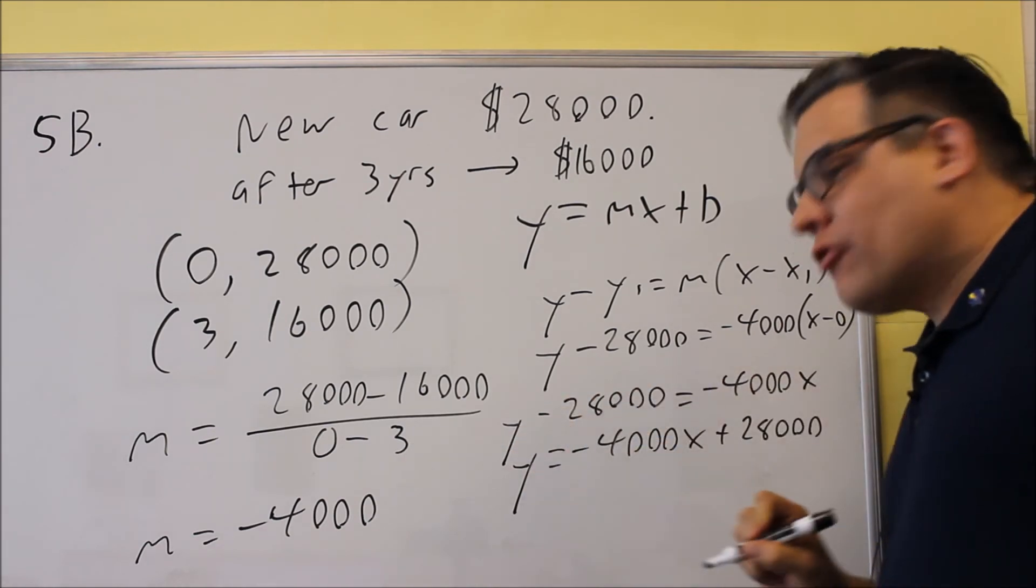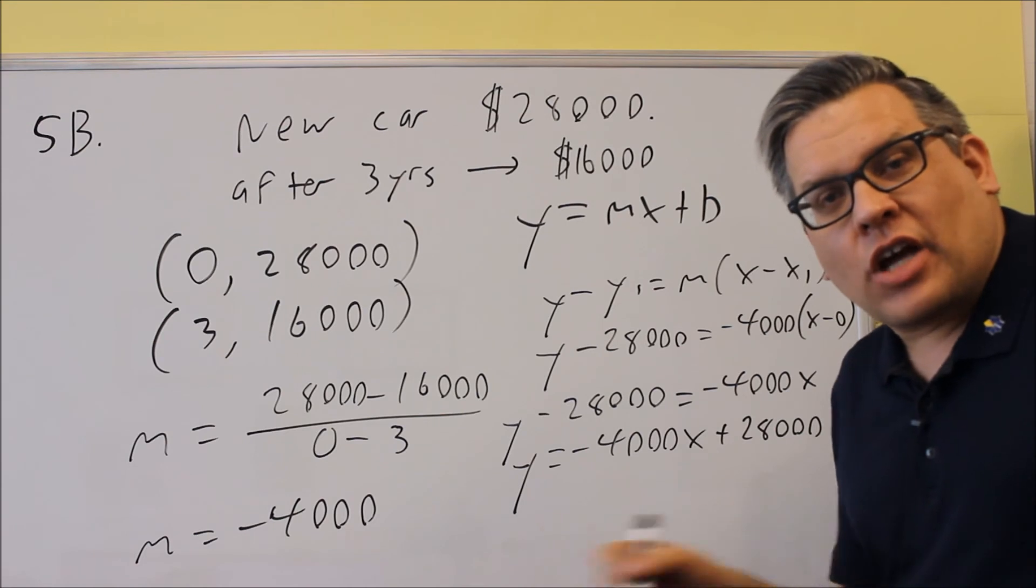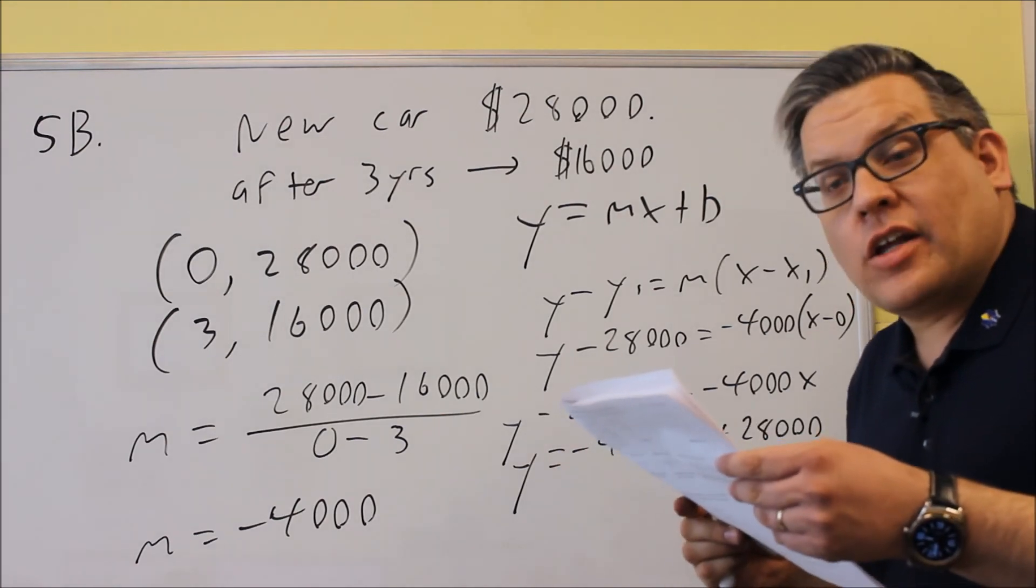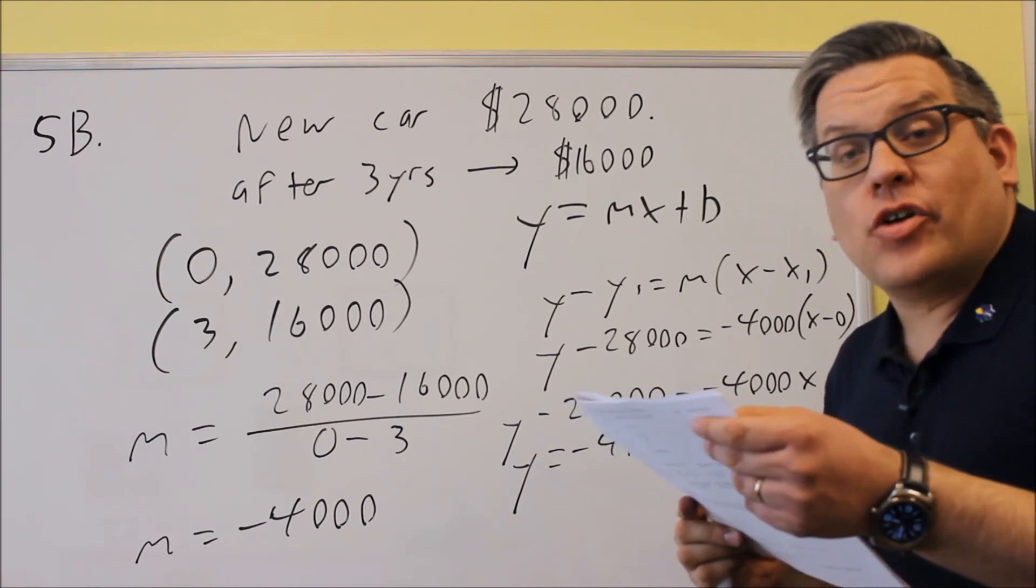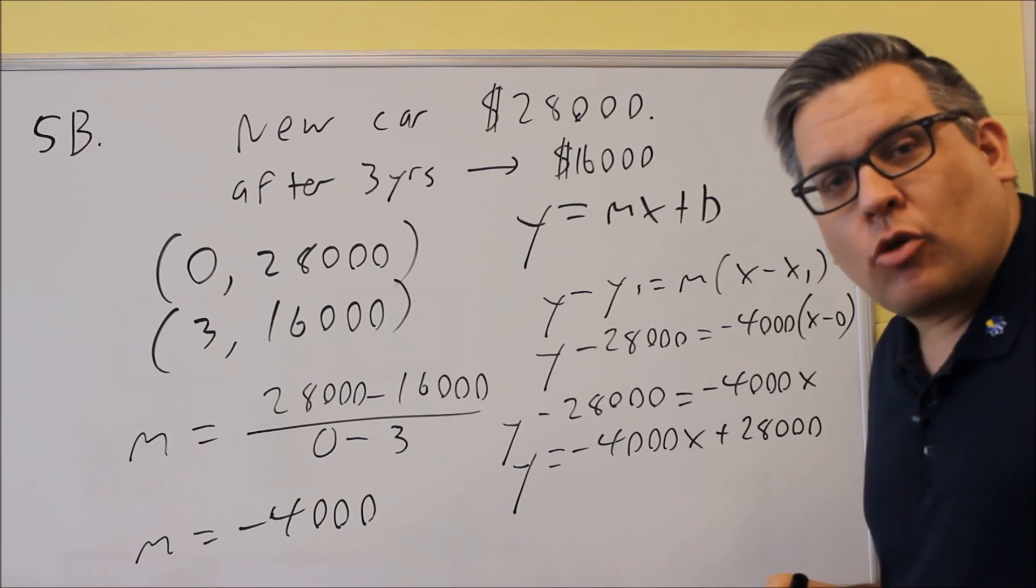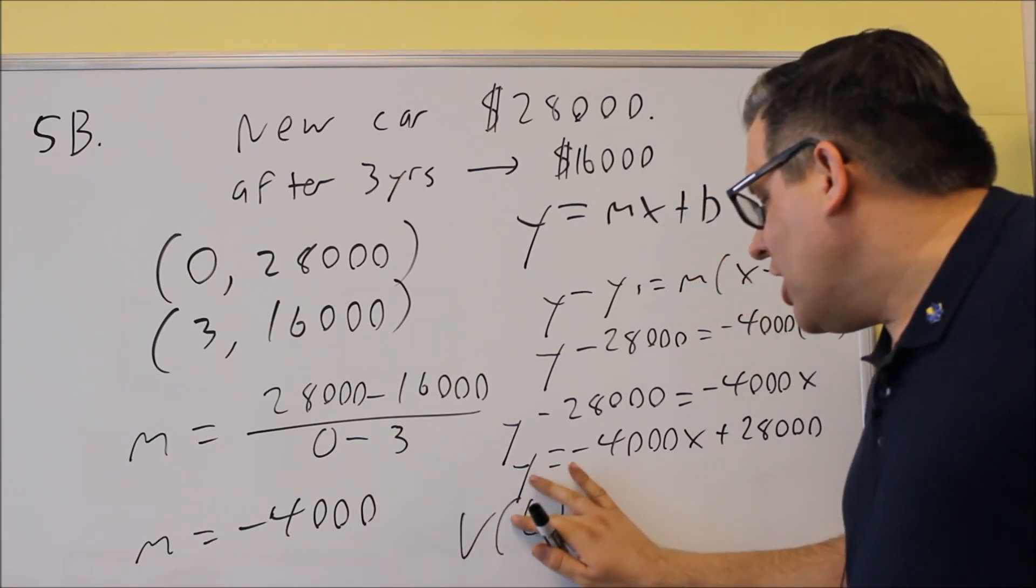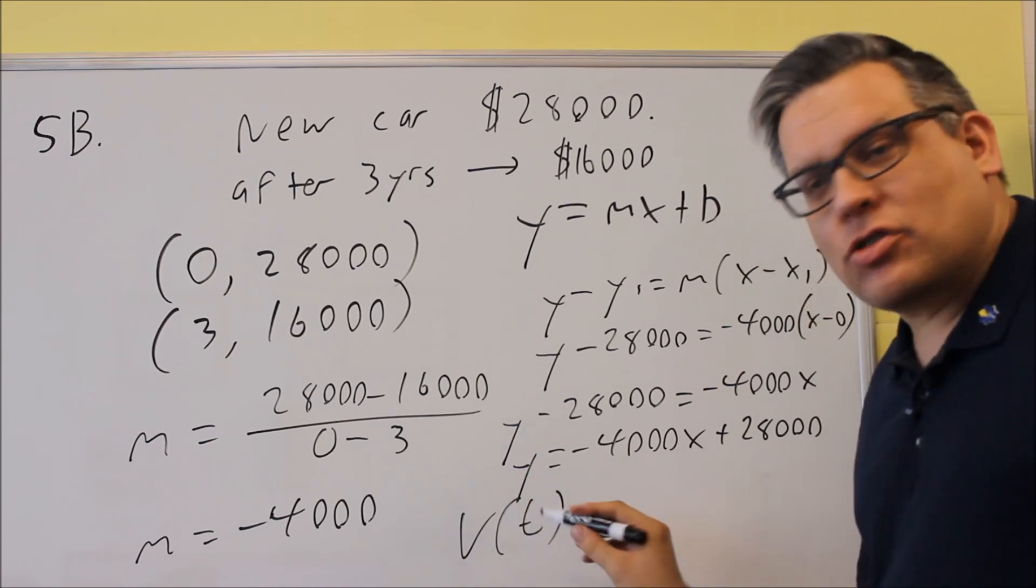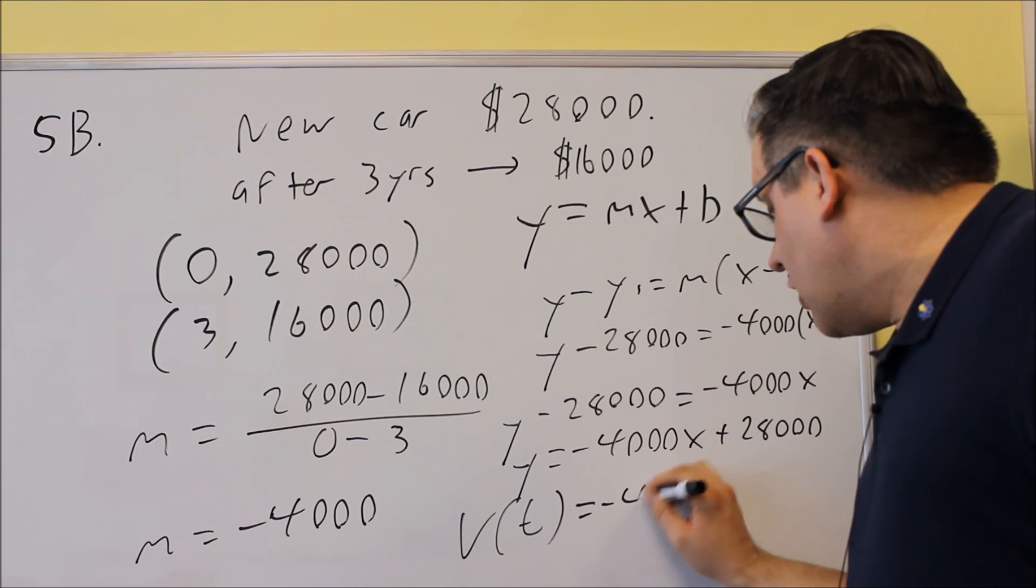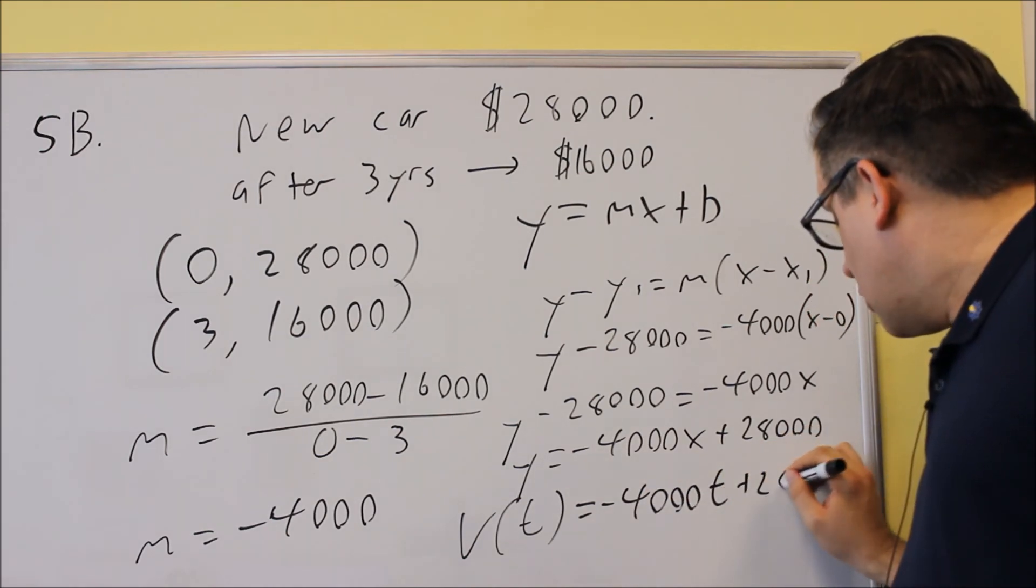If you put this for the answer, you won't get full credit because you have to pay attention to the instructions. It says write a linear function for the value v in terms of t. We need the correct variables. So we use v of t, a function of v in terms of t, which equals negative 4,000t plus 28,000.